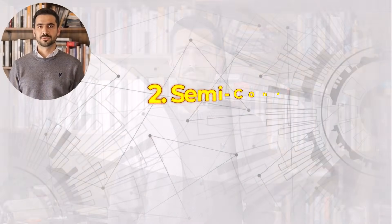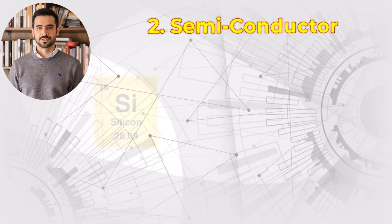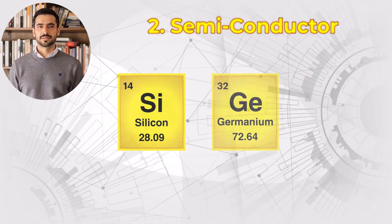They play a critical role in preventing electrical hazards and ensuring devices function safely. But what if a material could behave like both a conductor and an insulator, depending on the situation? That's where semiconductors come in. Let's uncover their magic.